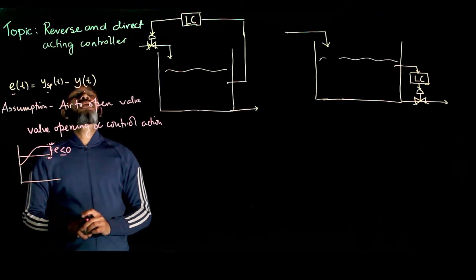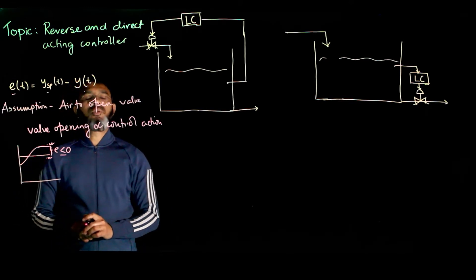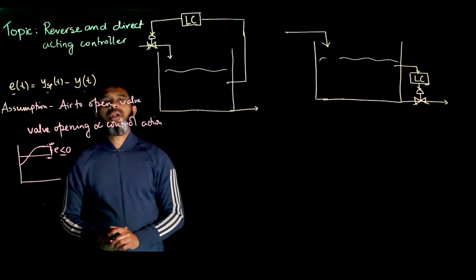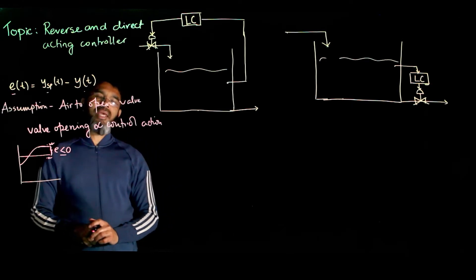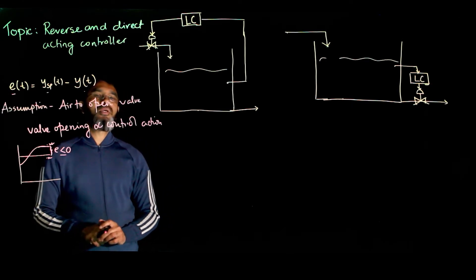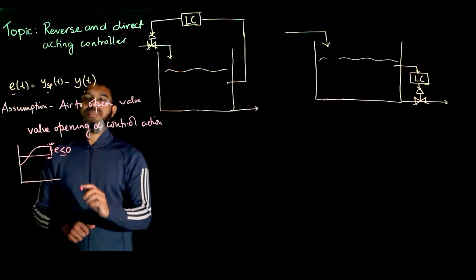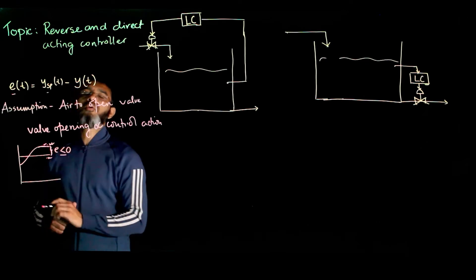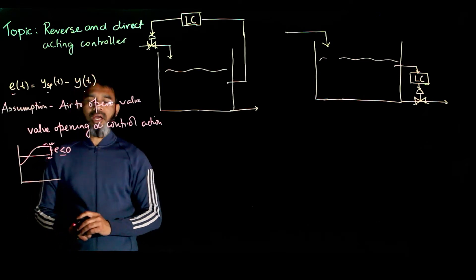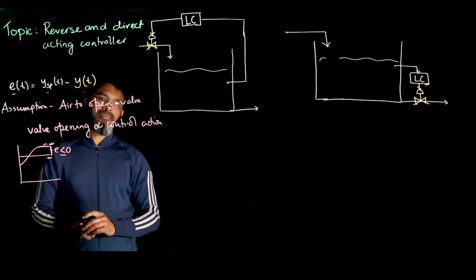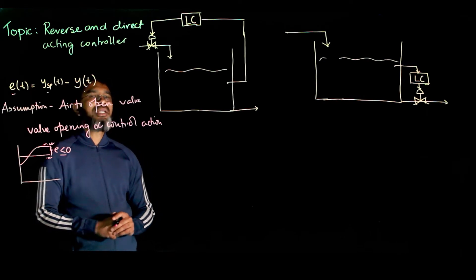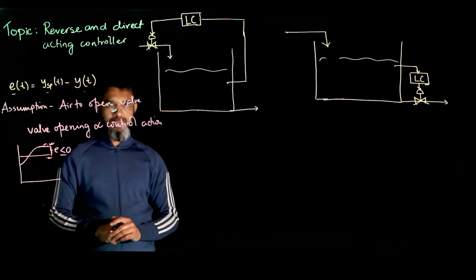If you want to maintain the speed by manipulating the fuel flow, when the speed goes beyond the desired value, you need to reduce the fuel flow — and that is reverse acting.